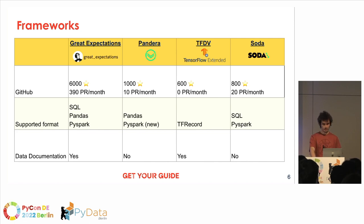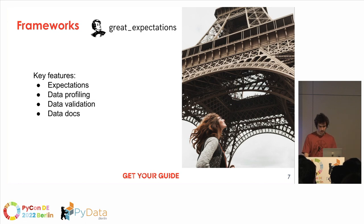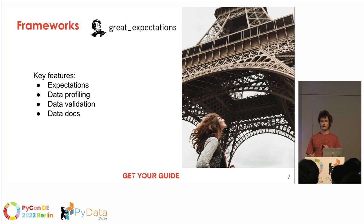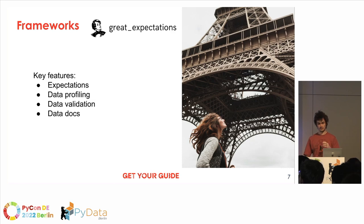Let's dive into the main features of Great Expectations. First, you have the concept of an expectation — it's a kind of assertion about the data, which is what we call a data unit test. The most common use cases are already implemented in the library: checking that a column has no nulls, that the mean and max are within certain values, the median, etc. If you have a very specific use case, you can always add your own custom assertions.